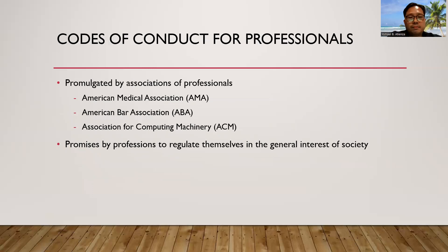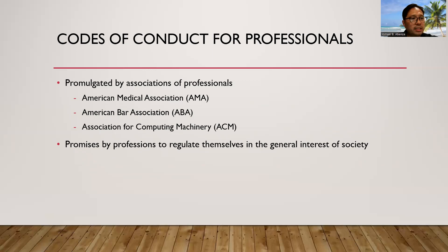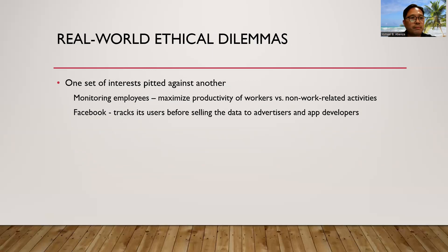The codes of conduct for professionals. With unique claims of expertise, wisdom, and respect, groups of people who identify as professionals have distinct responsibilities and rights. These include the American Medical Association, American Bar Association, and Association for Computing Machinery. By establishing entrance requirements and competence, these professional organizations assume responsibility for the partial regulation of their respective professions. By signing codes of ethics, professions pledge to govern themselves in society's best interest. Real-world ethical dilemmas are one set of interests pitted against another. For example, monitoring employees — maximizing productivity of workers versus non-related activities — and Facebook, which attracts users before selling their data to advertisers and app developers.